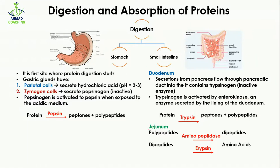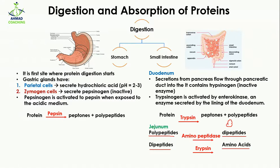The next part of the small intestine is the jejunum. In the jejunum, the polypeptides produced in the duodenum and stomach are converted into dipeptides by the enzyme aminopeptidase. Then these dipeptides are converted into amino acids by the enzyme erepsin. A dipeptide, as the name indicates, is made up of two amino acids, and these are converted into individual amino acids. By the end of the jejunum, all protein has been fully digested into amino acids.